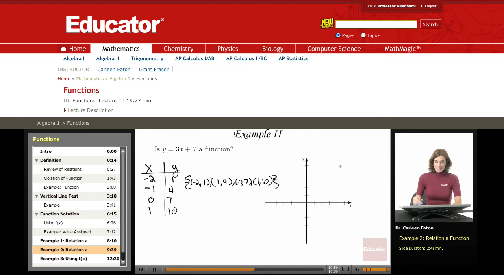So my first point is negative 2, 1. My second point is negative 1, 4. My third point is 0, 7. It's going to be about up here.